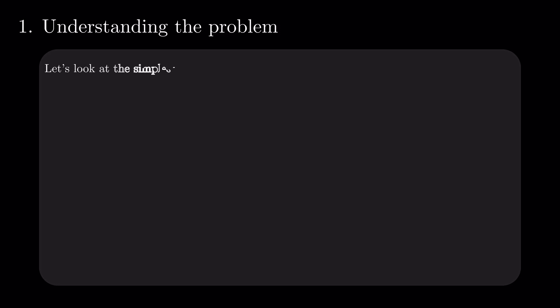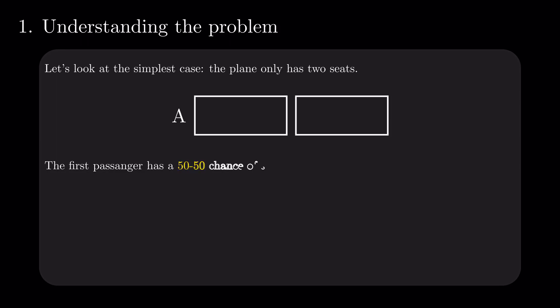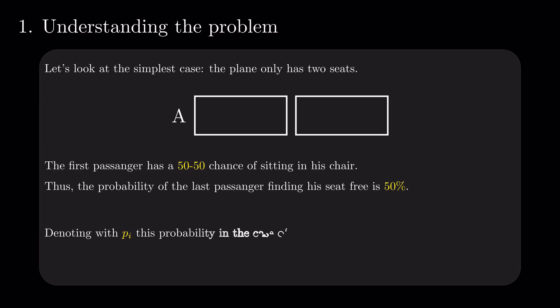So let's reduce the number of passengers to just two, the drunk and the unfortunate one that shares the plane with them. This situation is simple. The first passenger has a 50-50 chance of sitting in his chair. Thus, the probability of the last passenger finding his seat free is 50%. If we abstract this probability to P(i) in the case of i seats, we just proved that P2 is 1 over 2.